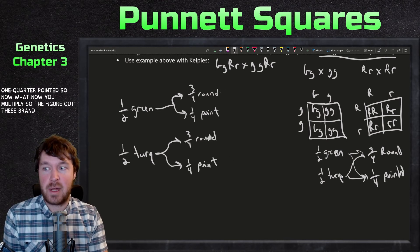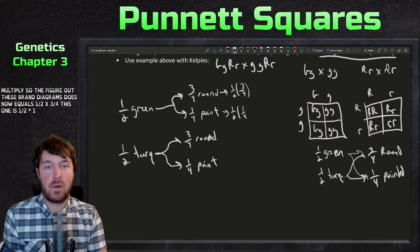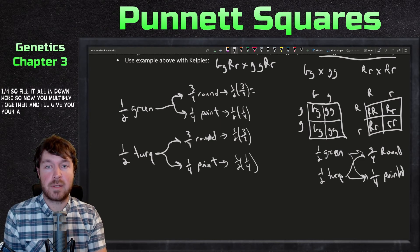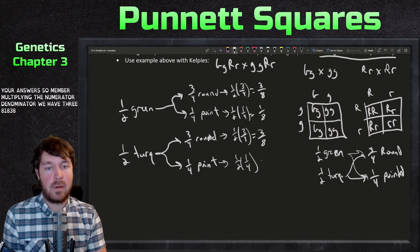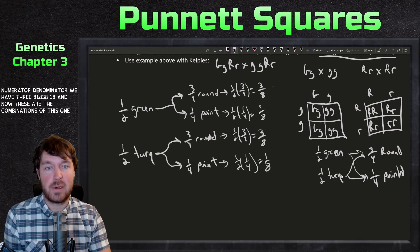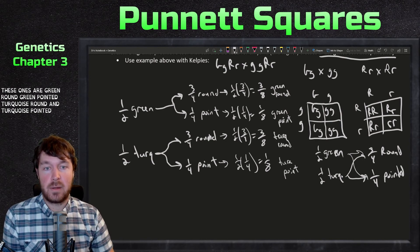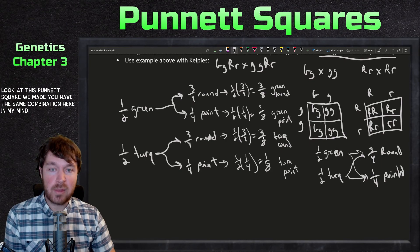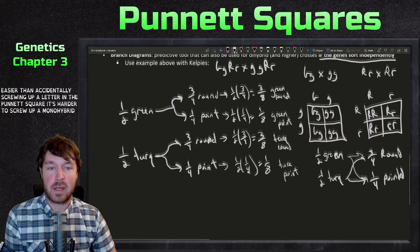To get the final probabilities, multiply along each branch. Green round: 1/2 × 3/4 = 3/8. Green pointed: 1/2 × 1/4 = 1/8. Turquoise round: 1/2 × 3/4 = 3/8. Turquoise pointed: 1/2 × 1/4 = 1/8. These match the Punnett square results, and this method is much less prone to errors than filling in all 16 squares.